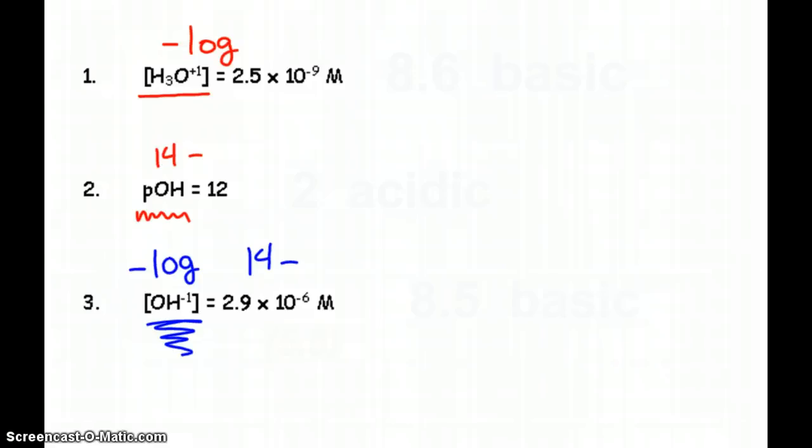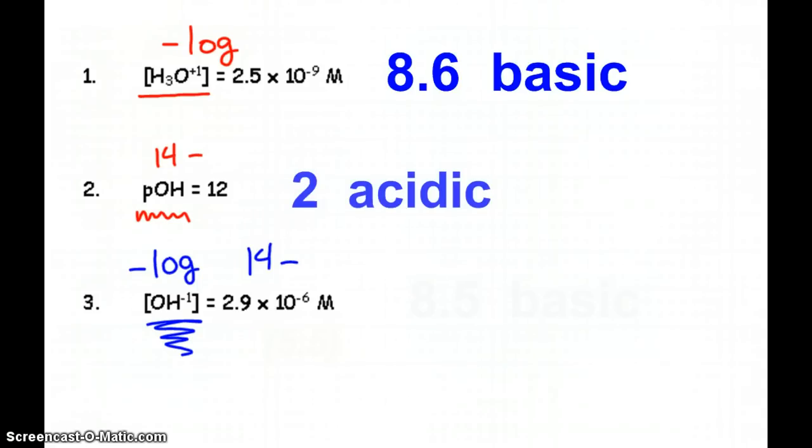So again, the first way that I can show this to you, if I give you the hydronium, you take the negative log of that number, you should have gotten 8.6, and that's a basic solution. The second way, if I give you the pOH, you just subtract. 14 minus 12 is 2, that's acidic.